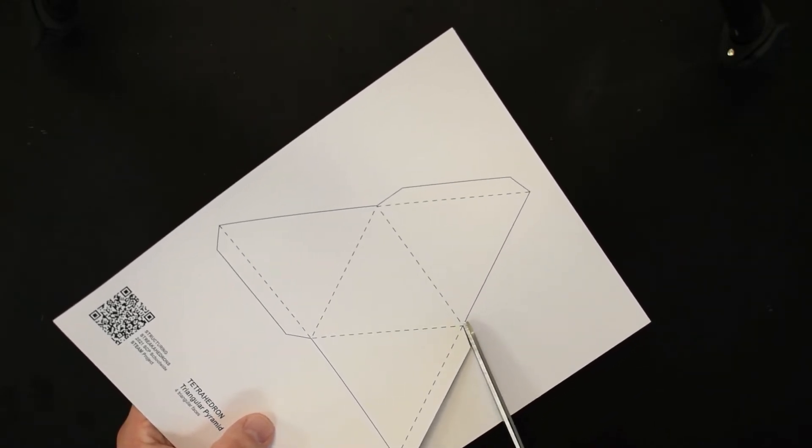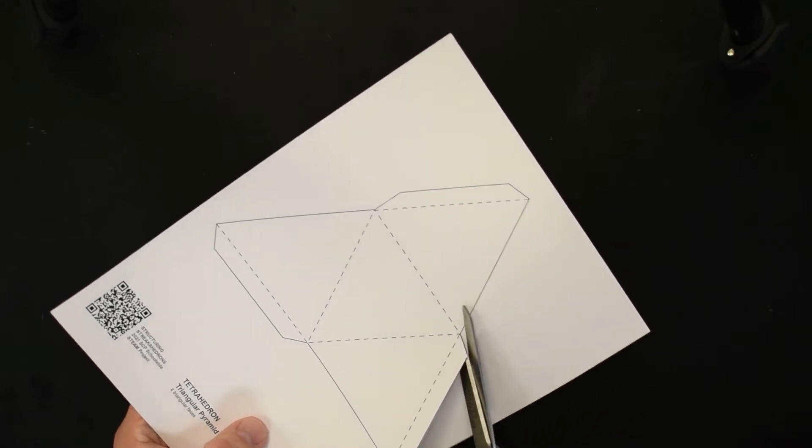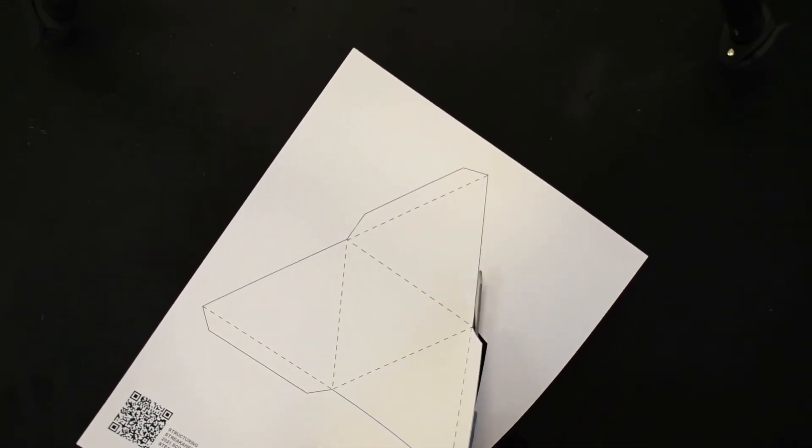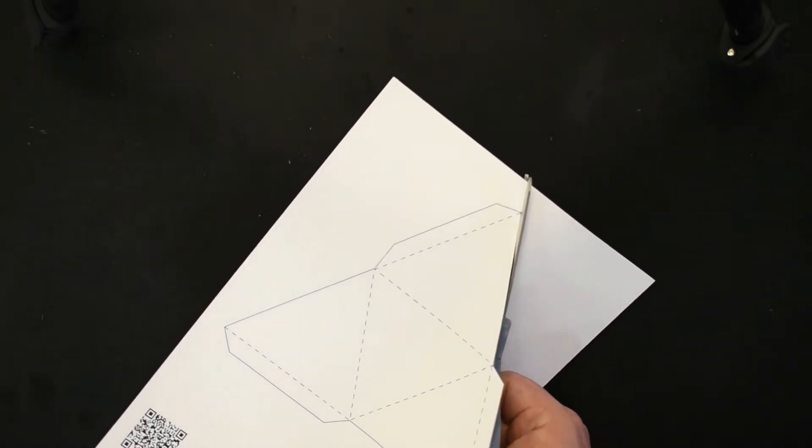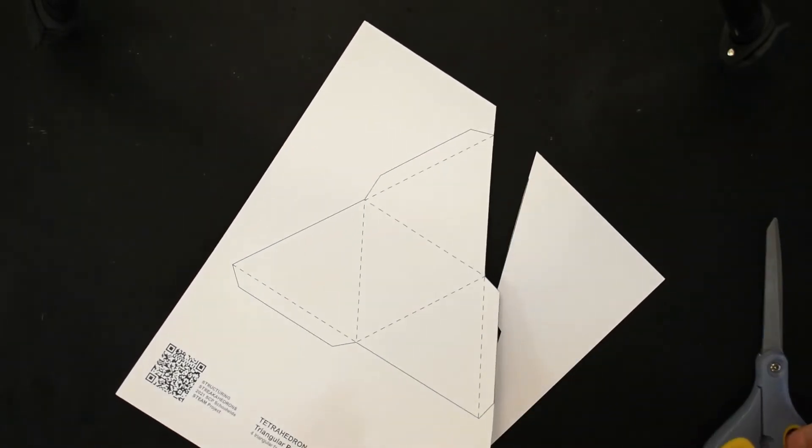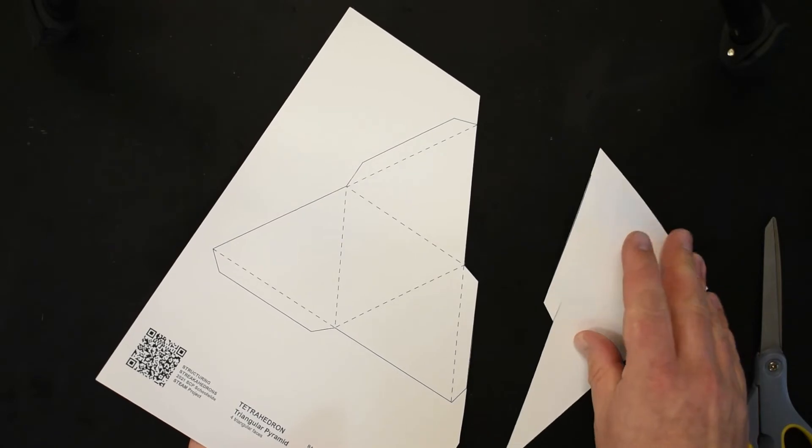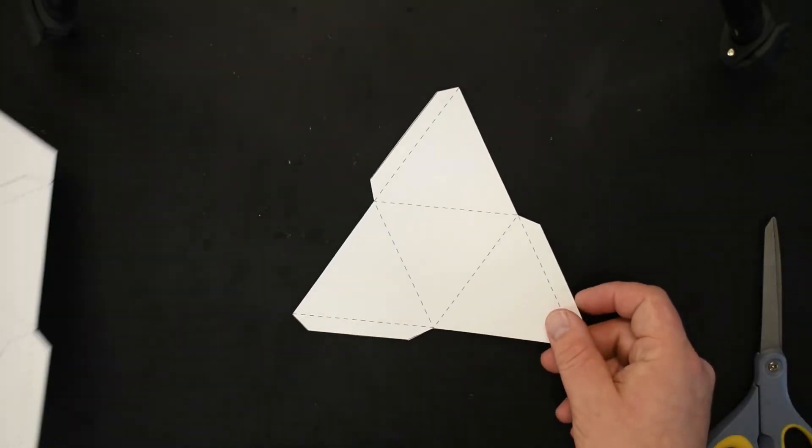When you get to an inside corner, don't go too far, because otherwise you're going to have holes in your final figure. Just cut all the way around. Once it's completely cut out, it's going to look like this.